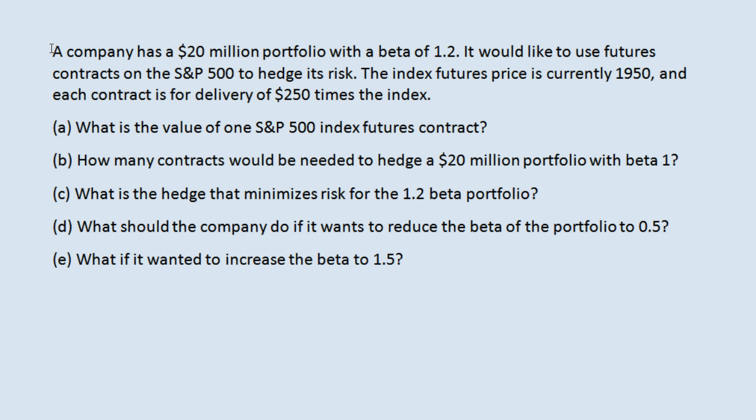Remember that beta is a measure of how volatile the portfolio is with respect to the market. The market has a beta of 1, and a portfolio with a beta of 1.2 moves 20% more than the market.